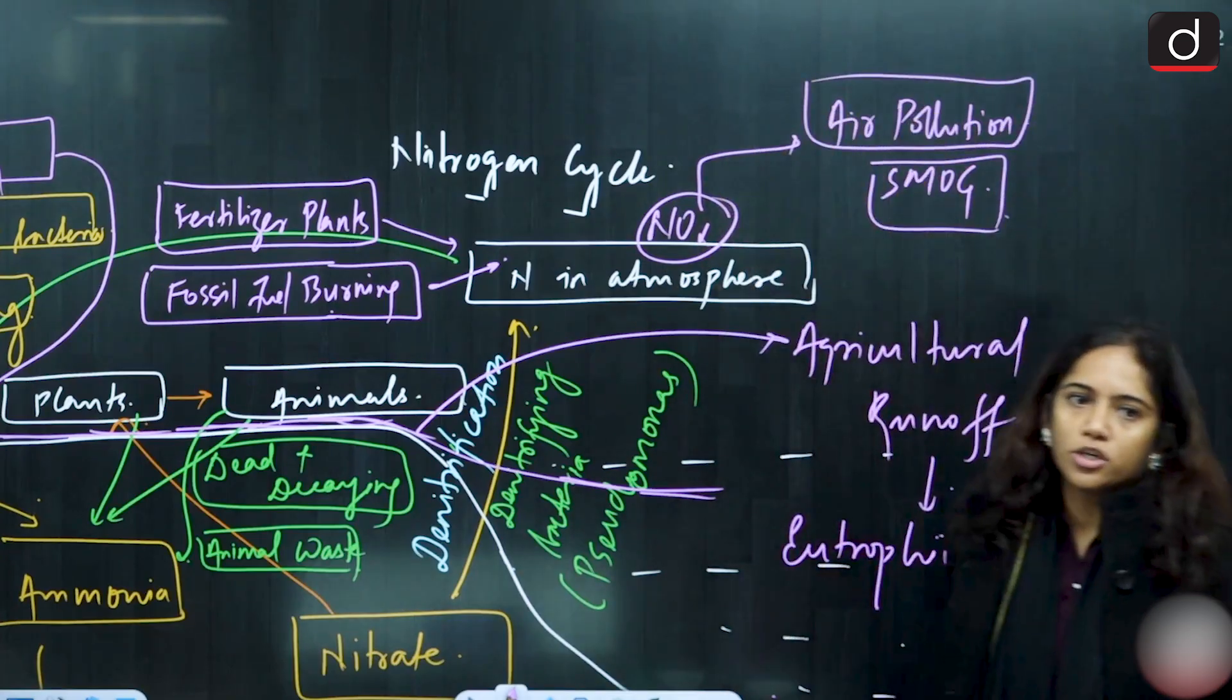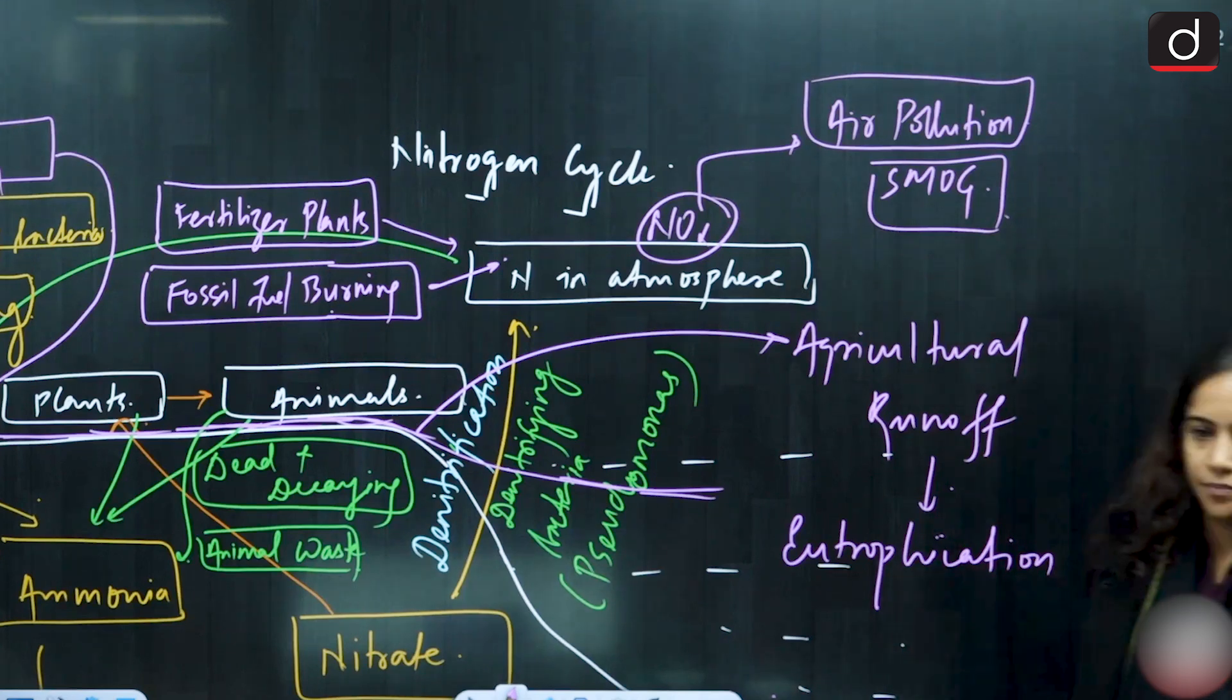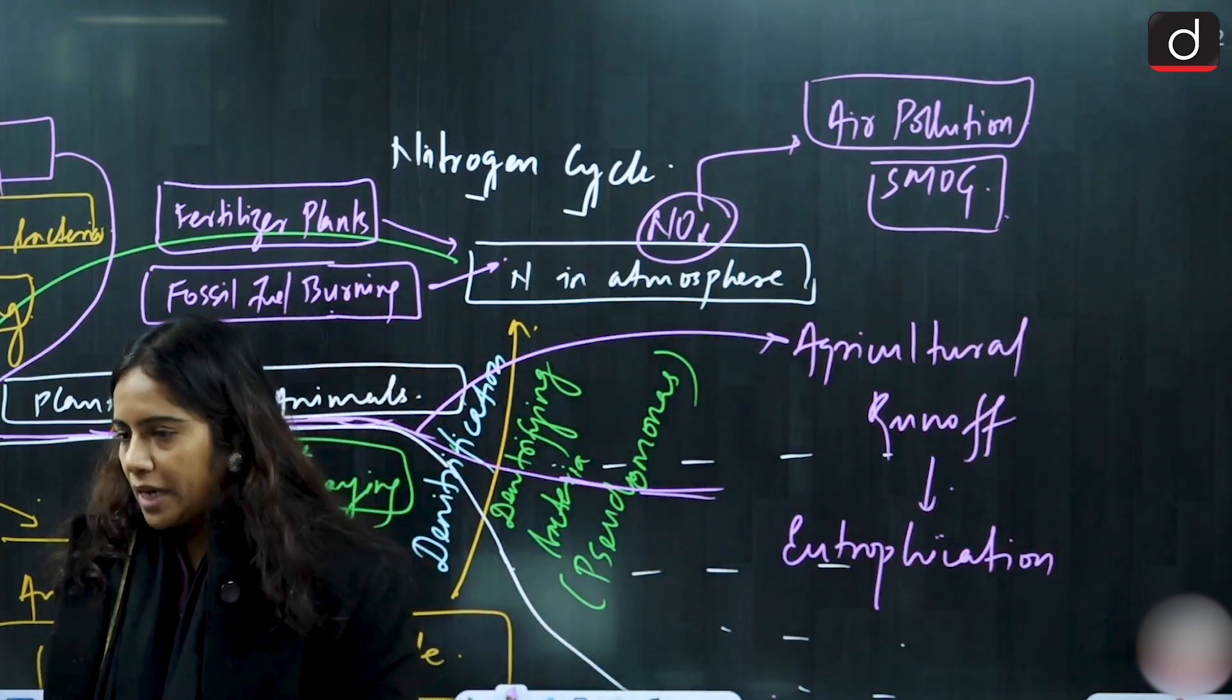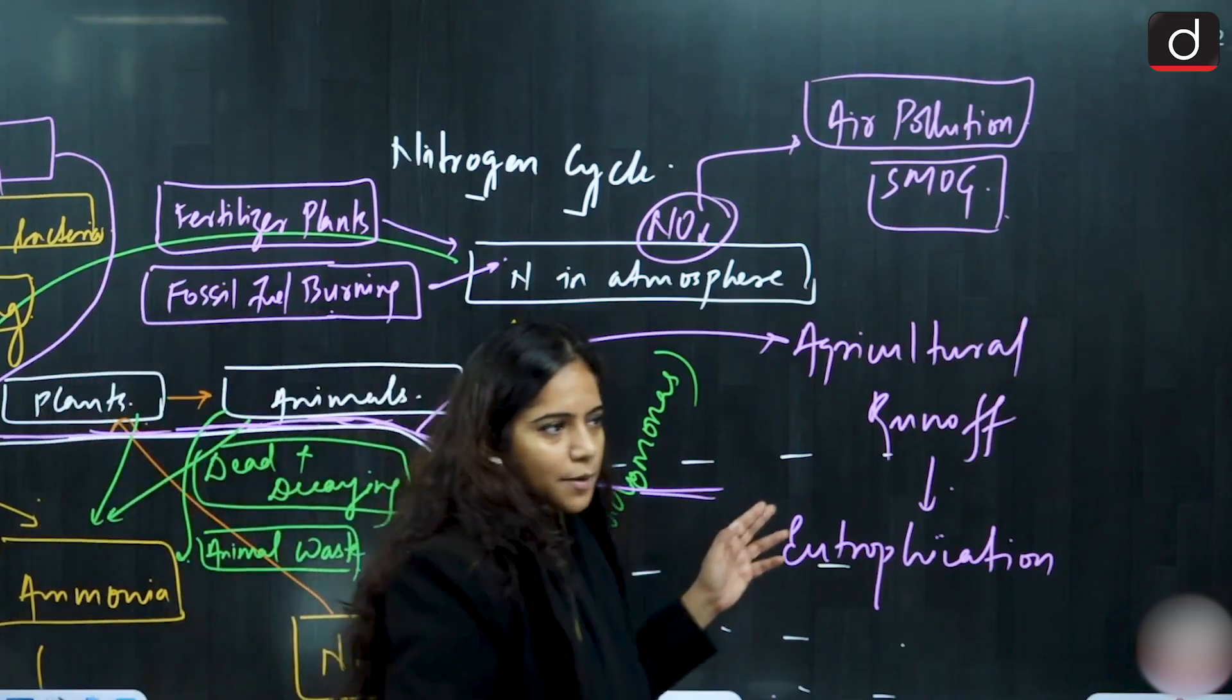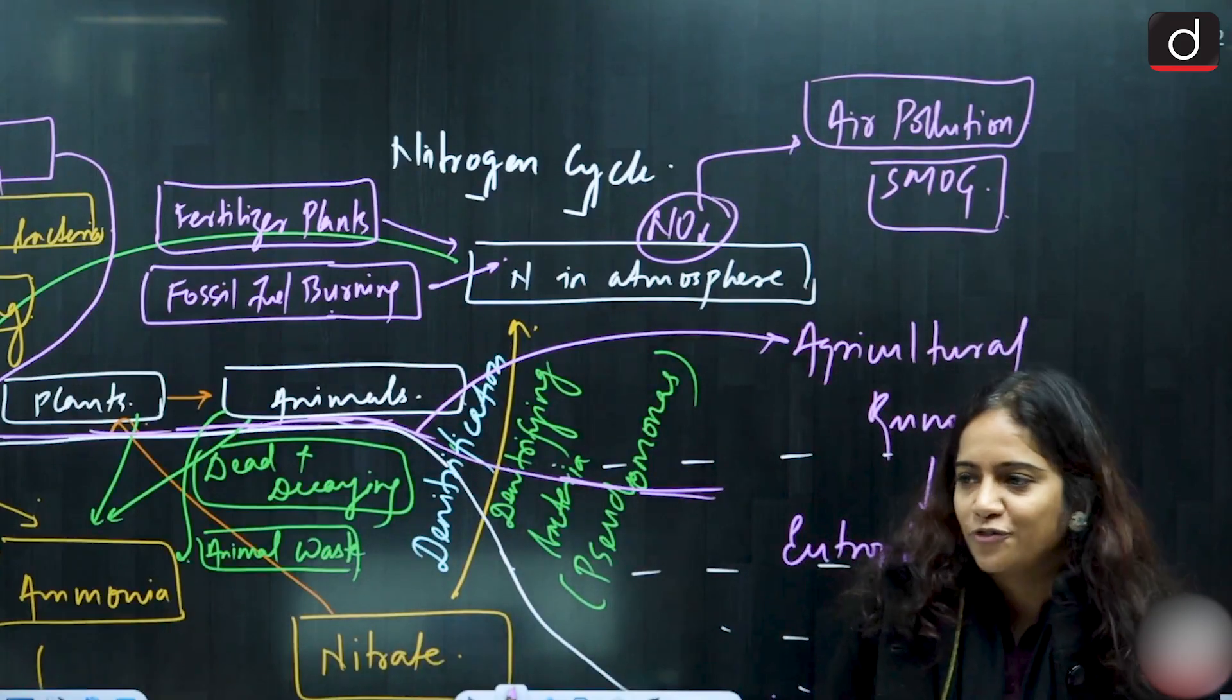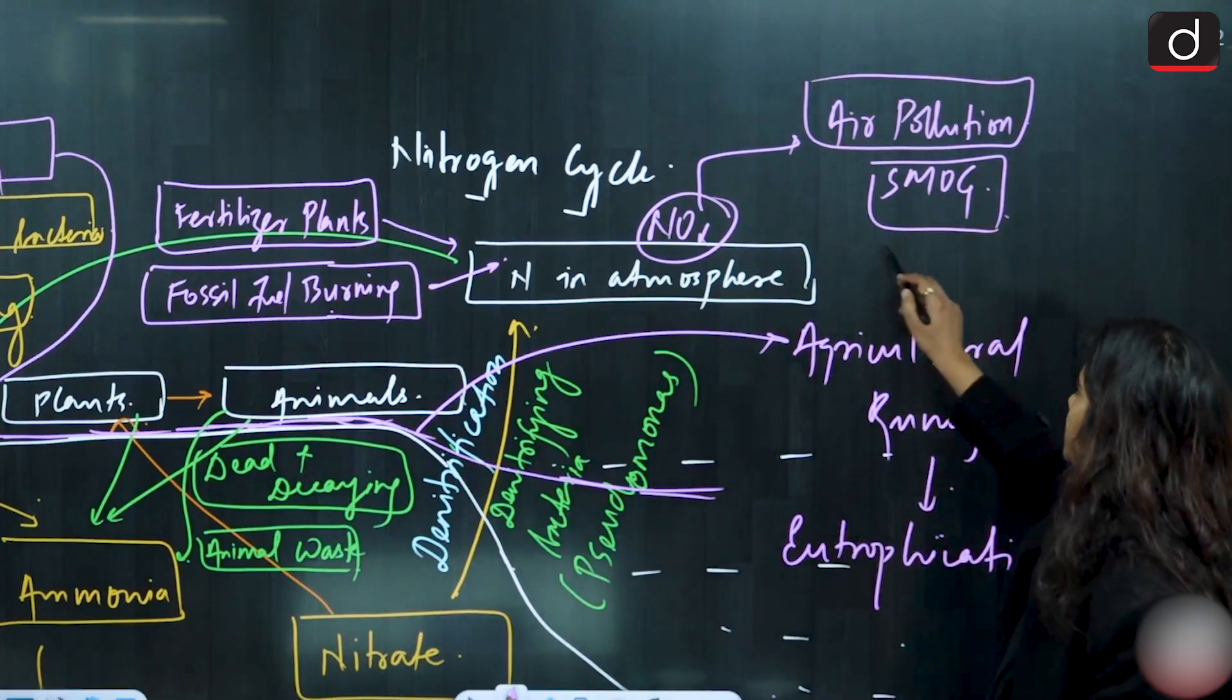If we combine with nitrogen, what will you have? Nitric acid. That means we would also be under acid rain. So let's have acid rain and let's see what is the impact of acid on other organisms. So here the third problem is acid rain.